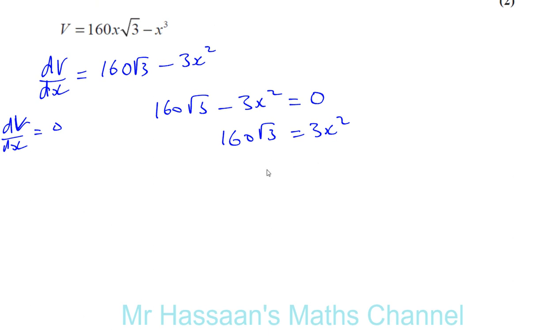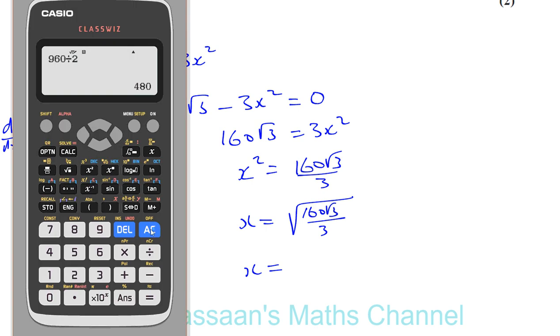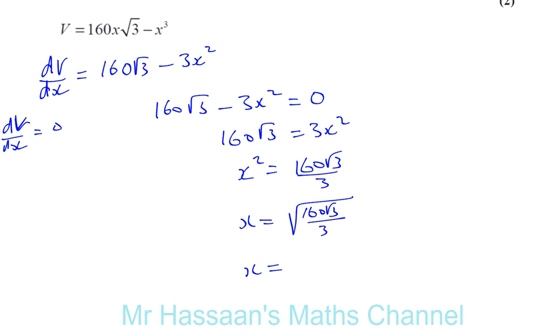Okay, so we have X squared is basically 160 times root 3 over 3. So X will be the square root of that, 160 times root 3 over 3. So we work out what that is. Okay, so we have the square root of 160 times root 3 divided by 3. That gives us 9.611. Let's see how they want to express the answer.